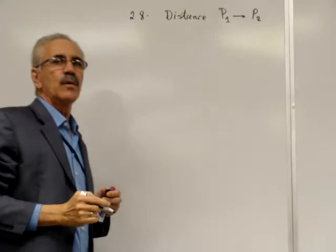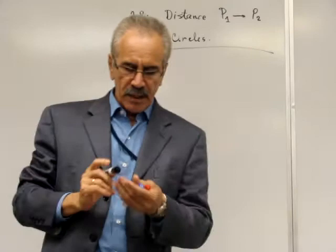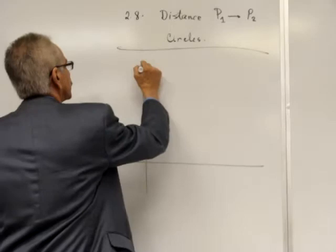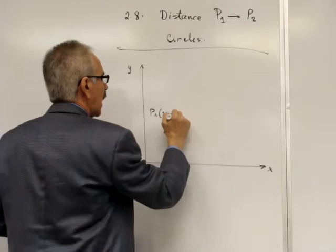The equation of a circle. So, let's begin remembering how you calculate the distance between two points. Suppose that we have point 1, P1, located at X1, Y1, right here.